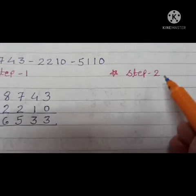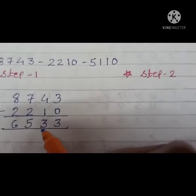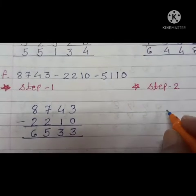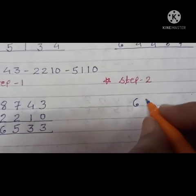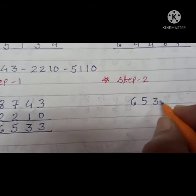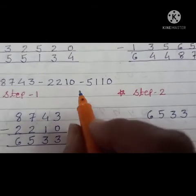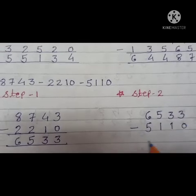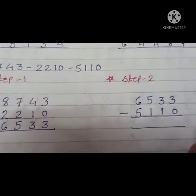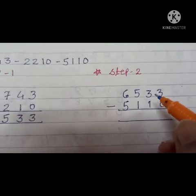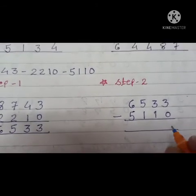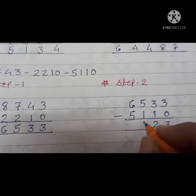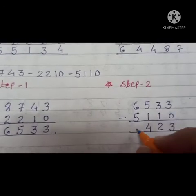Now next step, step number 2. First write this number. Step 2, 6,533 minus this number, 5,110. Now subtract the ones first. 3 minus 0, 3. 3 minus 1, very easy, 2. 5 minus 1, 4. And 6 minus 5, 1. 1423, very simple and easy.